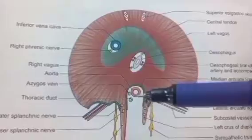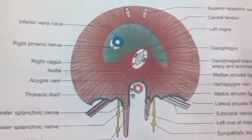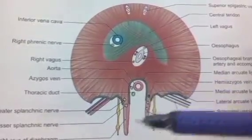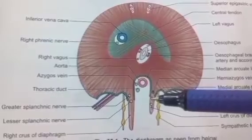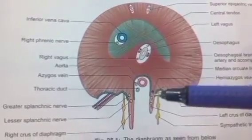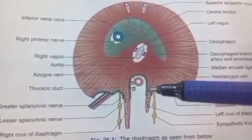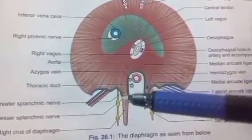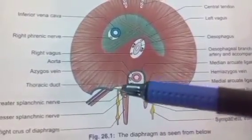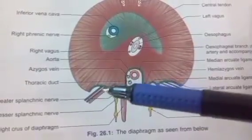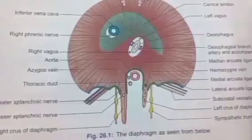Apart from the three major openings, there are many small openings in the diaphragm. Each crus of the diaphragm is pierced by the greater and lesser splanchnic nerves. The left crus, apart from both splanchnic nerves, is also pierced by the hemiazygos vein. The sympathetic chain passes from the thorax to the abdomen behind the medial arcuate ligament, whereas the subcostal nerve and vessels pass behind the lateral arcuate ligament.